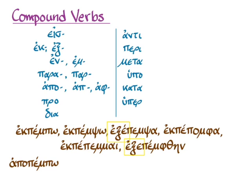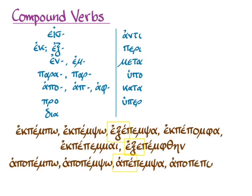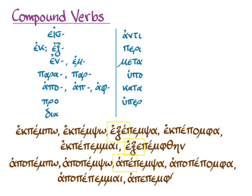Similar things are going to happen with 'apopempo.' The second principal part is no big deal, but 'apepempsa' shows you two things: that the augment goes between the prefix and the stem, and that here, with a prefix whose preposition form has a vowel at the end, that vowel is lost before another vowel. It gets that omicron back in the fourth and fifth principal parts. But again in the sixth principal part, we're going to have the augment between the prefix and the stem, and the omicron is going to go away.